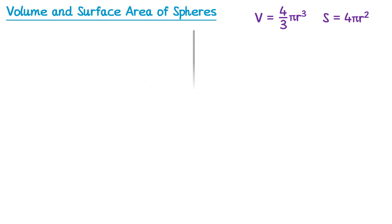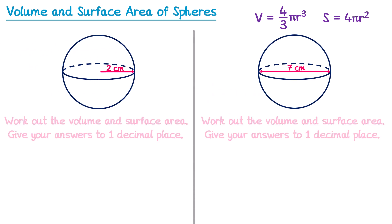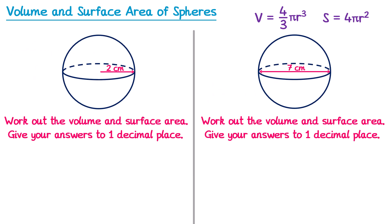Here are two more spheres for you to work out the volume and surface area of. Round your answers to one decimal place. Be careful on the second one, because I've not given you the radius — I've given you the diameter instead.